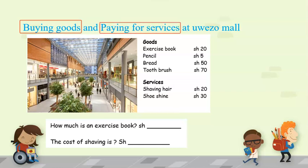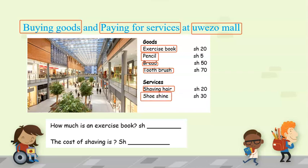Let's look at these goods and services at Weather Mall. At Weather Mall we have some goods like exercise books, a pencil, bread, and a toothbrush. You can also get some services like hair shaving and shoe shining.